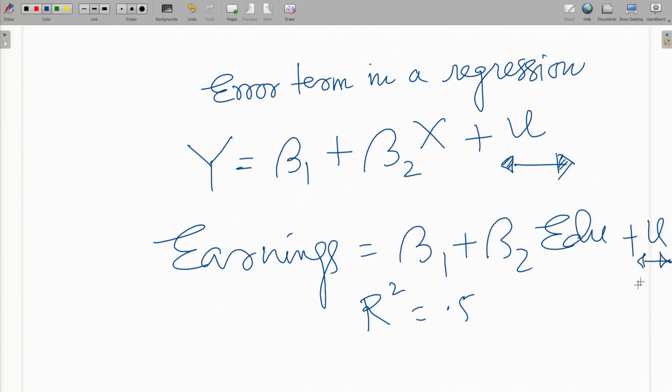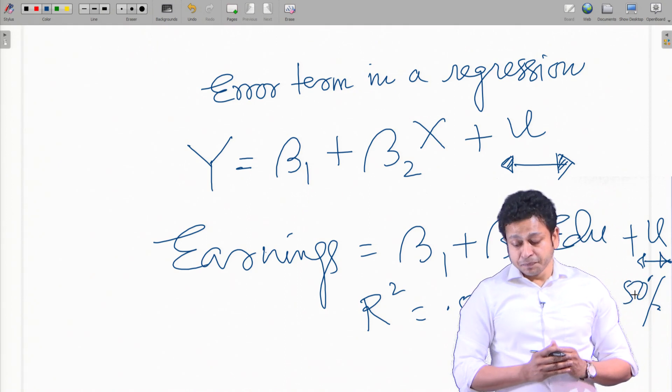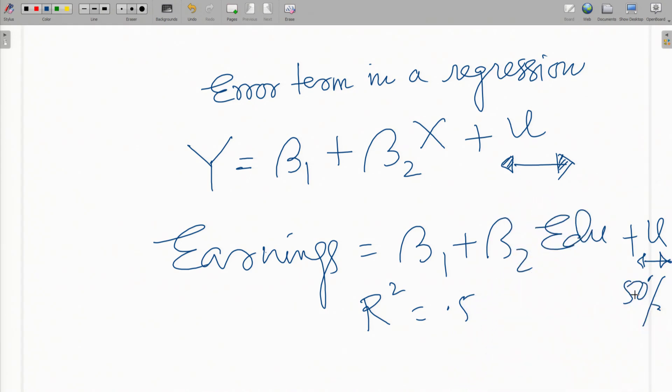That means 50 percent of the variation in the data is not explained by the model, which is accounted for by the error term. But even then, with 50 percent error, we consider this model to be reasonably good. So that means the error term is that big in your regression equation. Now we need to understand where this error term is coming from.